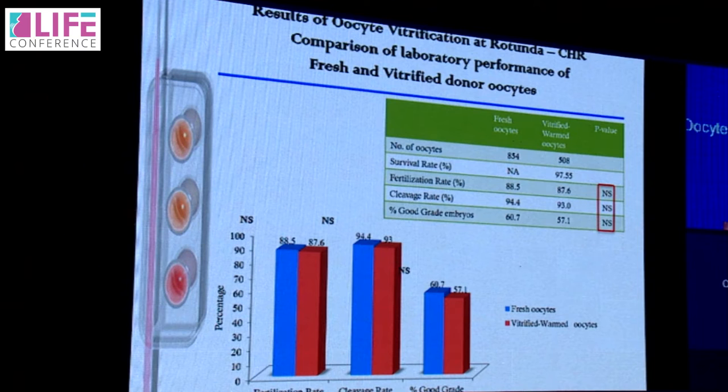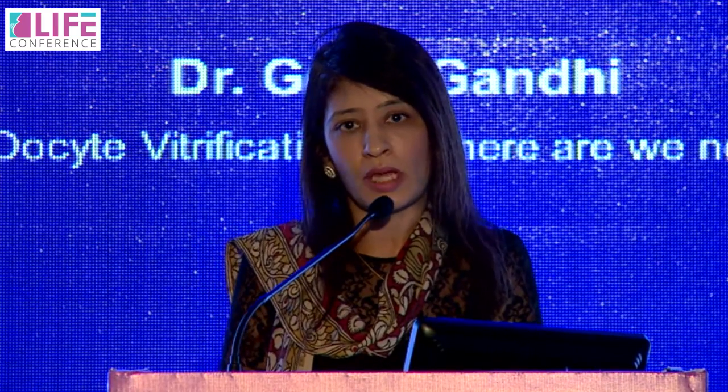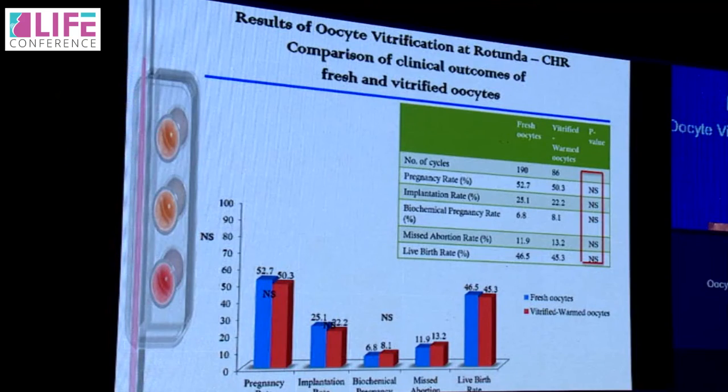I would like to share our results of oocyte vitrification using donor oocytes — frozen donor oocytes. In a laboratory comparison of fresh versus vitrified and warmed oocytes, we were happy to note no difference in fertilization rate, cleavage rate, or good-grade embryo rates between fresh and vitrified warmed oocytes. These were all donor oocytes from young patients under the age of 30. Looking at clinical results — the same donor oocyte group — there was again no difference in pregnancy rate, implantation rate, or biochemical pregnancy rate between fresh and vitrified warmed oocytes.